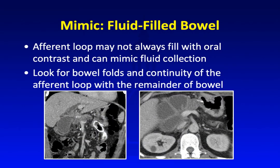Something to be aware of is that fluid-filled bowel can mimic a fluid collection, especially in Whipple procedures where the afferent loop — due to altered nerve supply — tends to be more distended and fluid-filled than the rest of the bowel, and may not fill with oral contrast. The important clue is knowing what procedure the patient had, looking for signs of bowel folds and bowel wall signatures, and confirming that the so-called fluid collection is contiguous with the rest of the bowel.